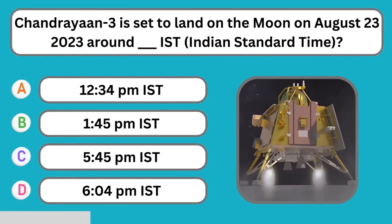Chandrayaan 3 is set to land on the moon on August 23rd, 2023 — around which Indian Standard Time?